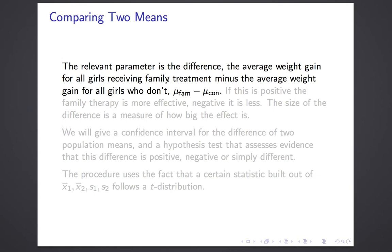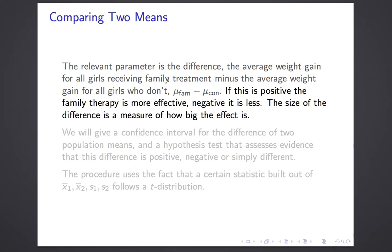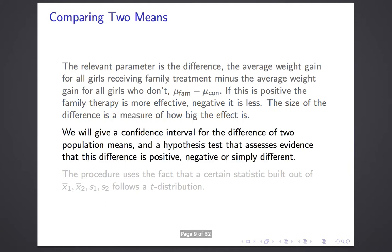The relevant parameter, just like in the two-sample proportions case, is the difference between two parameters: the average weight gain of those receiving the family treatment minus the average weight gain of those who don't. We'll call that mu sub fam for family treatment and mu sub con for control. If it's positive, the family therapy is more effective than no therapy. If it's negative, it means it's less effective. How big it is tells you the average effectiveness of this therapy.